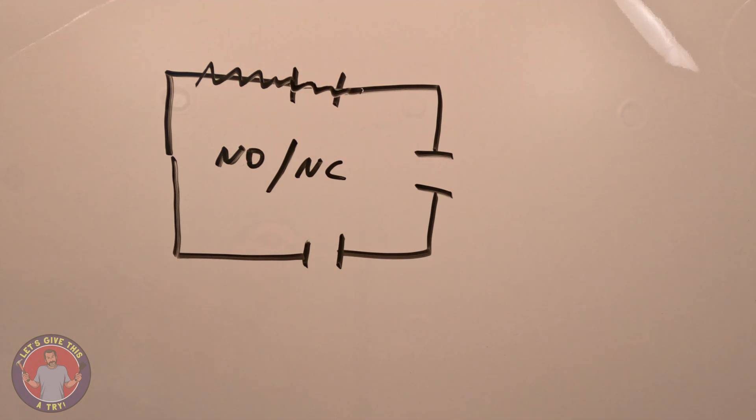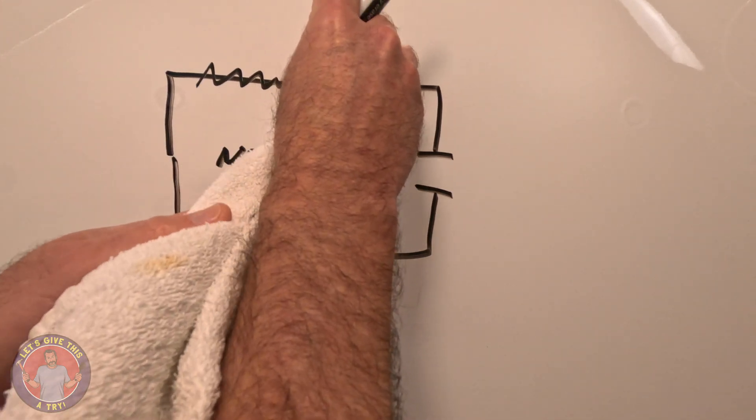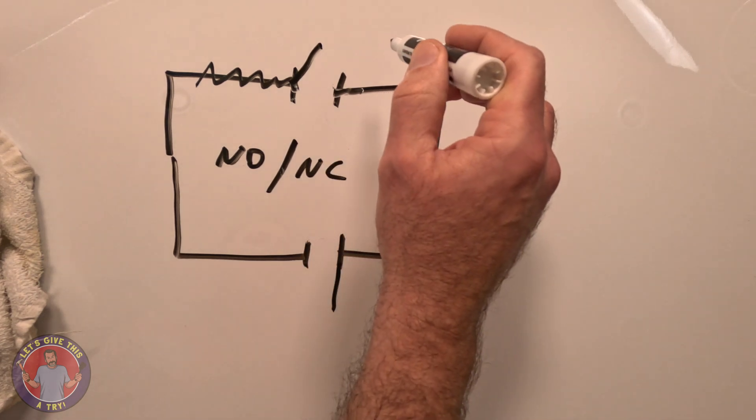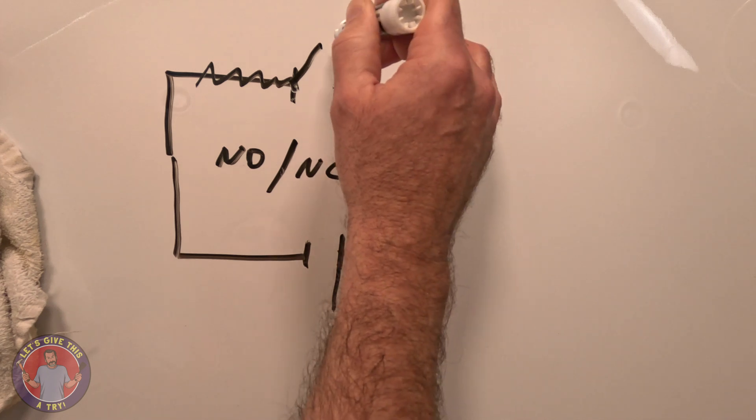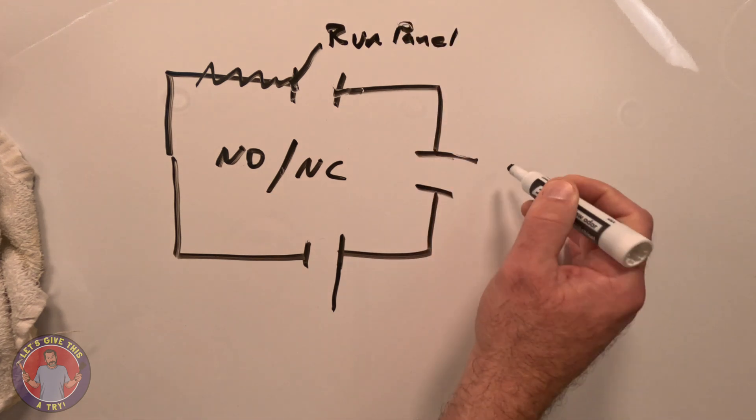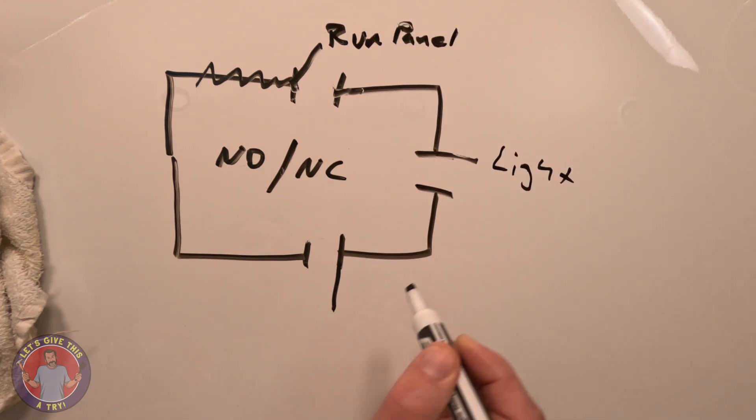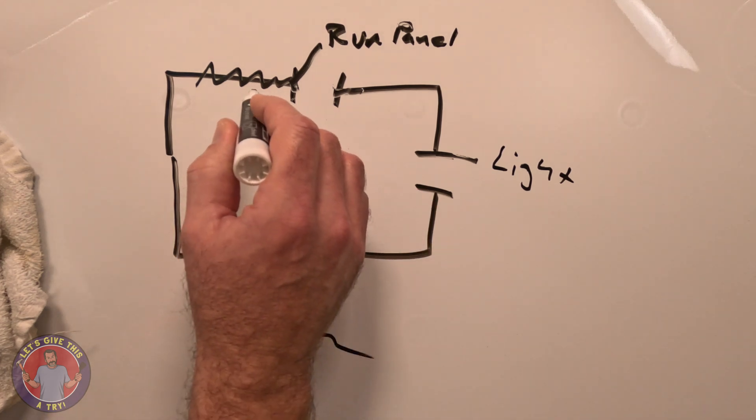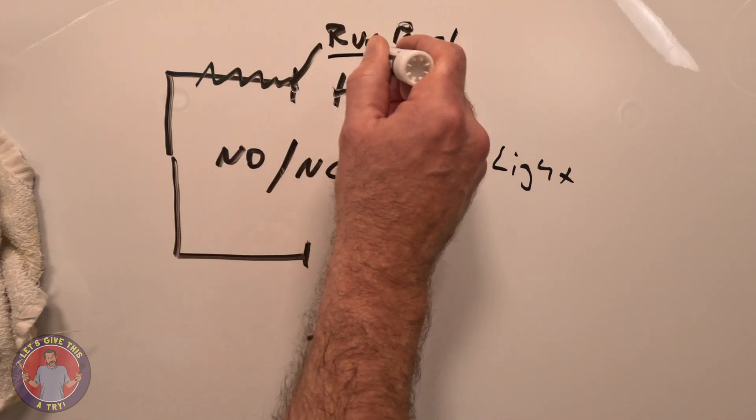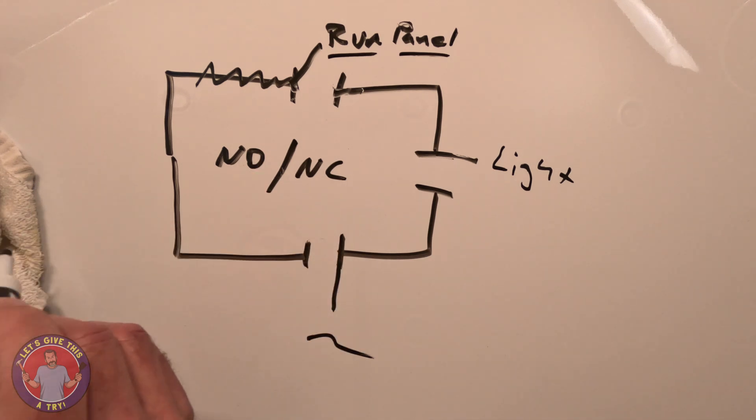These switches here are connected to a task or a chore. This might be to run the panel. This might be for the light. When the door to the microwave is open, you can't run the panel. You can't turn on the microwave and start using it because this switch is connected to the power that runs the microwave.